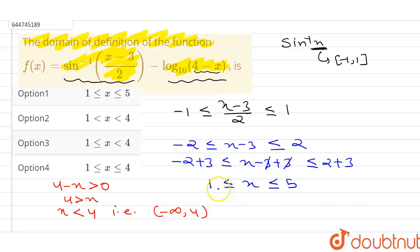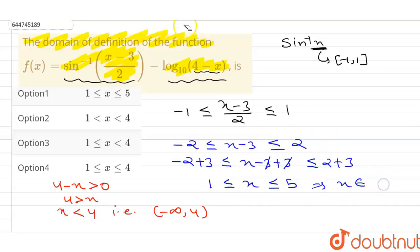So minus 2 plus 3 is 1, and the 3s cancel, giving 1 ≤ x ≤ 5. So x lies between 1 and 5. In interval form, this is the closed interval [1, 5].